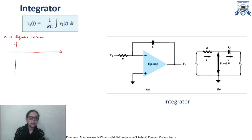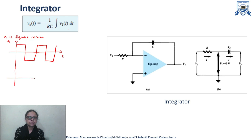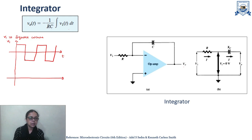V1 is a square wave being applied at the input of the integrator. From the expression, if we integrate the constant part of the square wave we will get the integration as t — meaning the waveform will vary with time. With the negative sign, the waveform will increase with time but in the negative direction. If we draw the output waveform, this is the time axis and this is the integrated waveform.